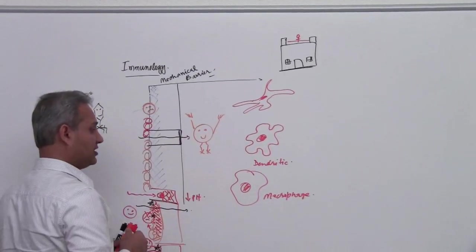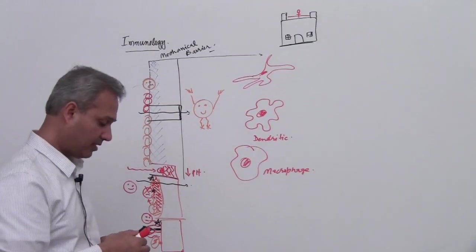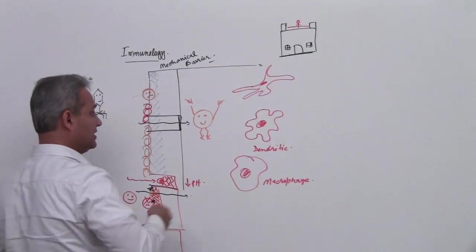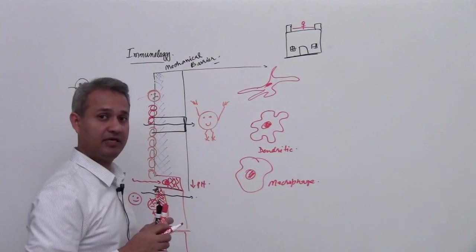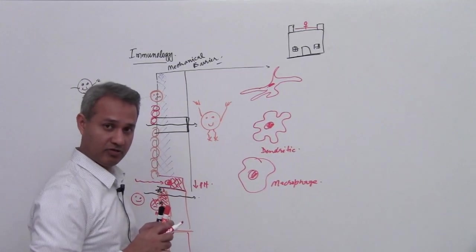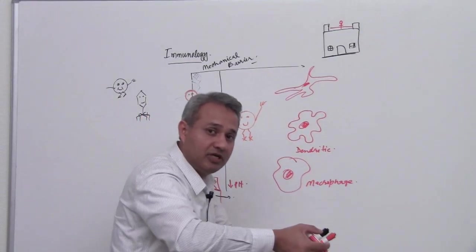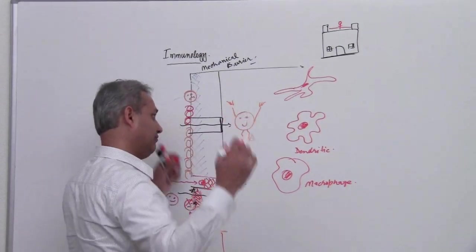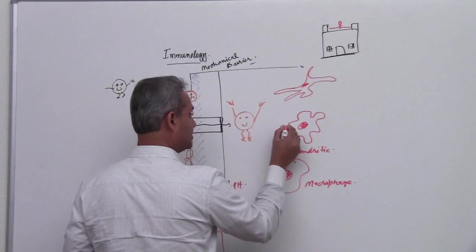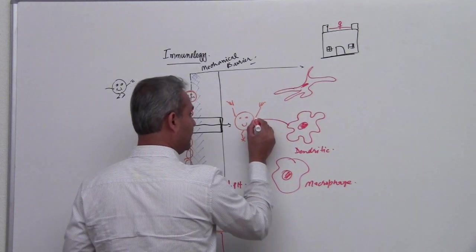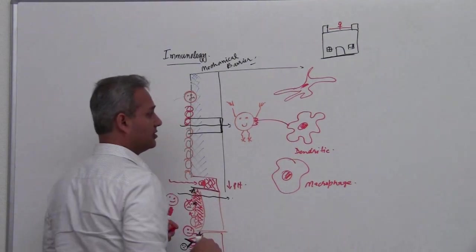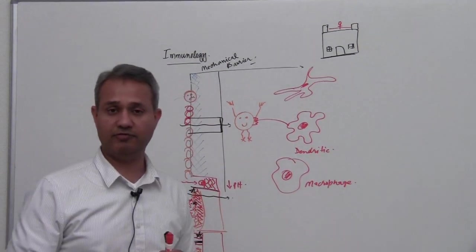So we have dendritic cells, we have macrophages. What happens is, this little happy bacteria or pathogen who has climbed in the body and is now having fun, that pathogen gets trapped by the dendritic cell or the phagocyte.